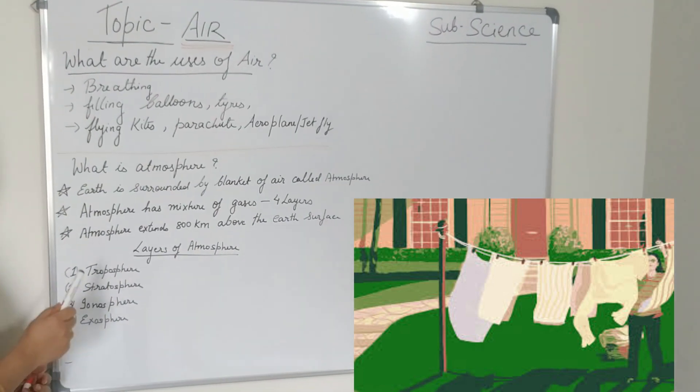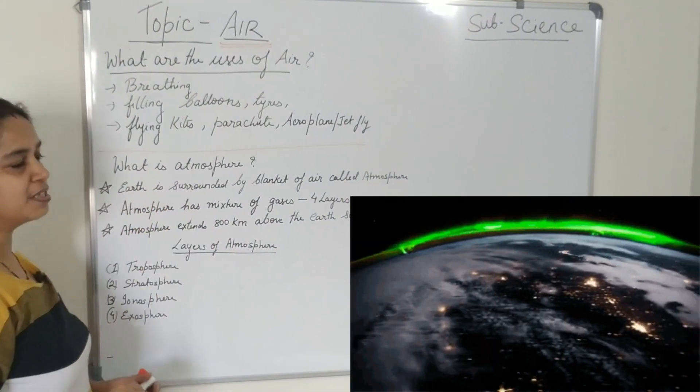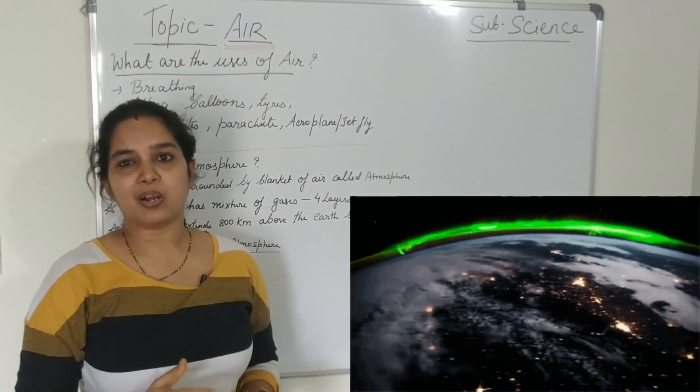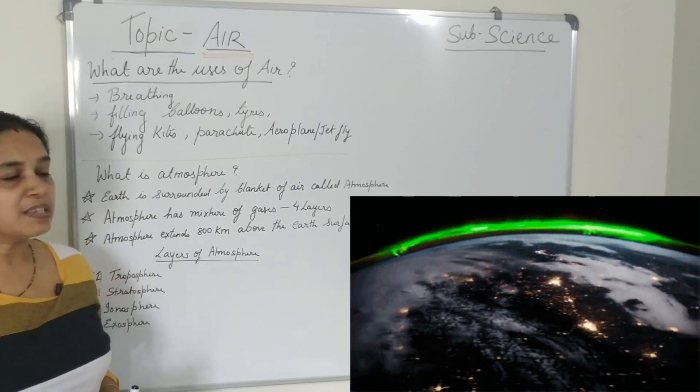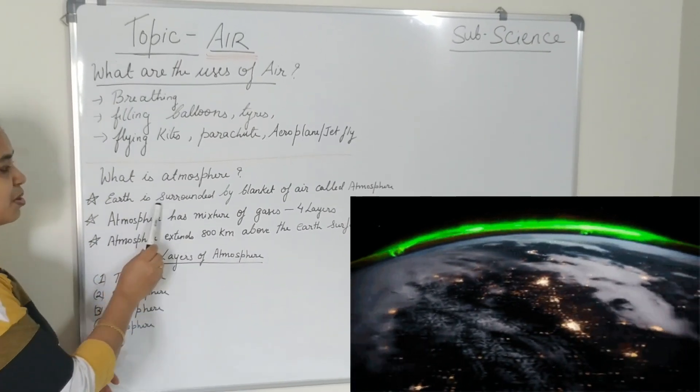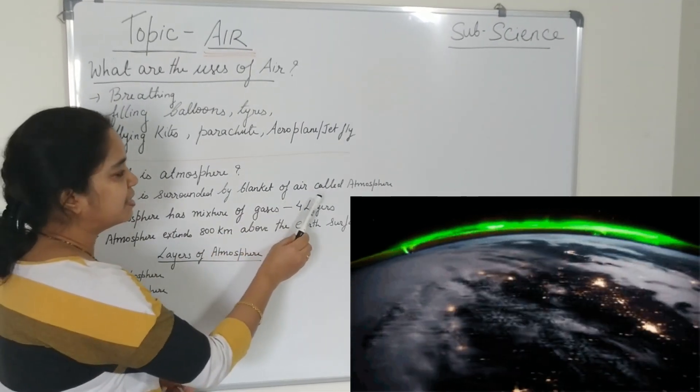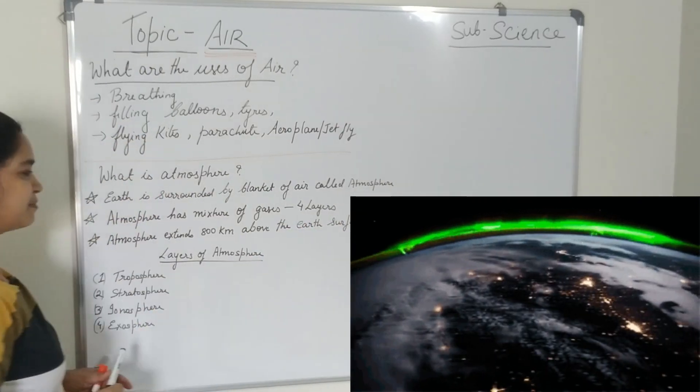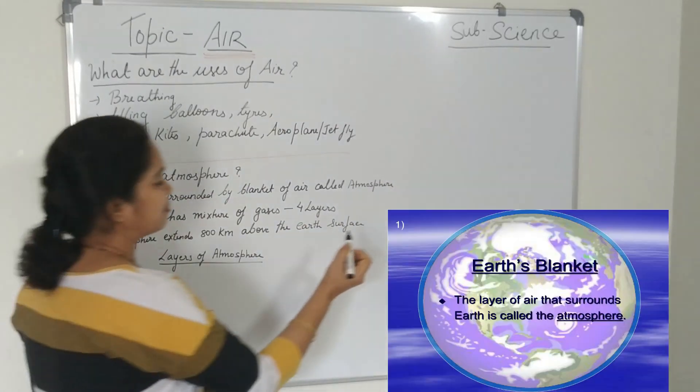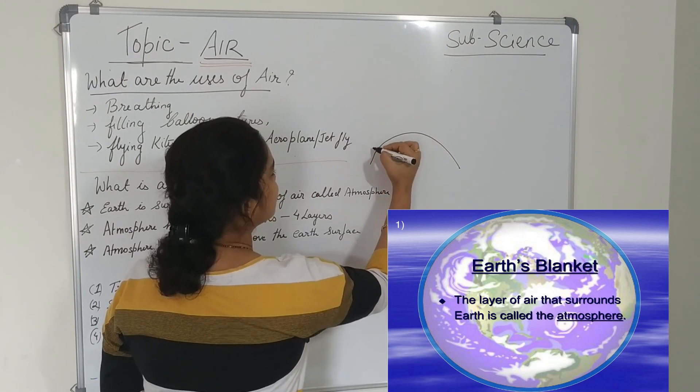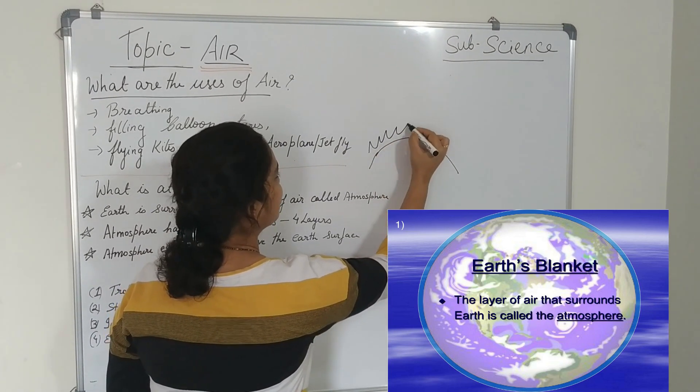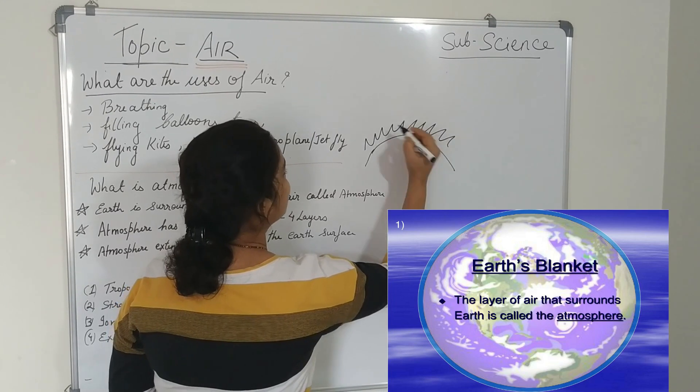Now we will learn what is atmosphere. So earth is surrounded by the layer of air and it is called the atmosphere. The earth is surrounded by a blanket of air and it is called atmosphere. So suppose this is the earth's surface and the air that is surrounding it is the atmosphere.